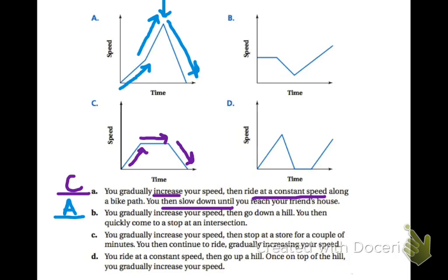Description C. You gradually increase your speed, then you stop at a store for a couple of minutes. You then continue to ride. Again, B is not increasing speed at the beginning. So that's going to make it D. But let's follow along.